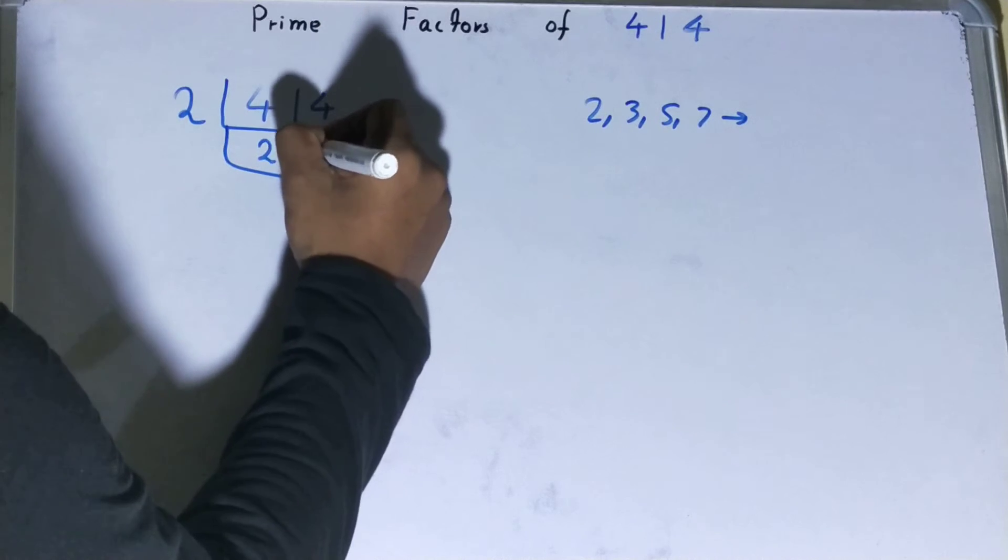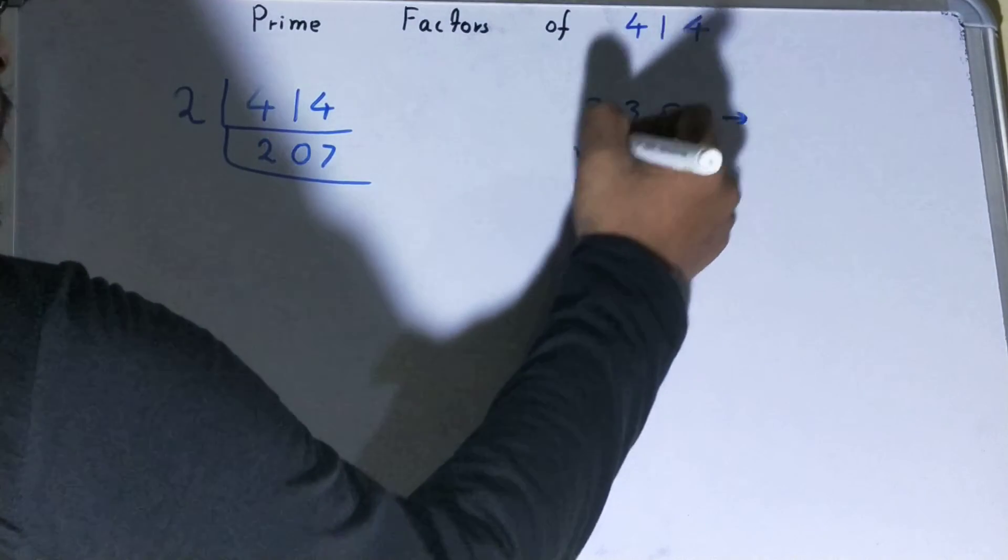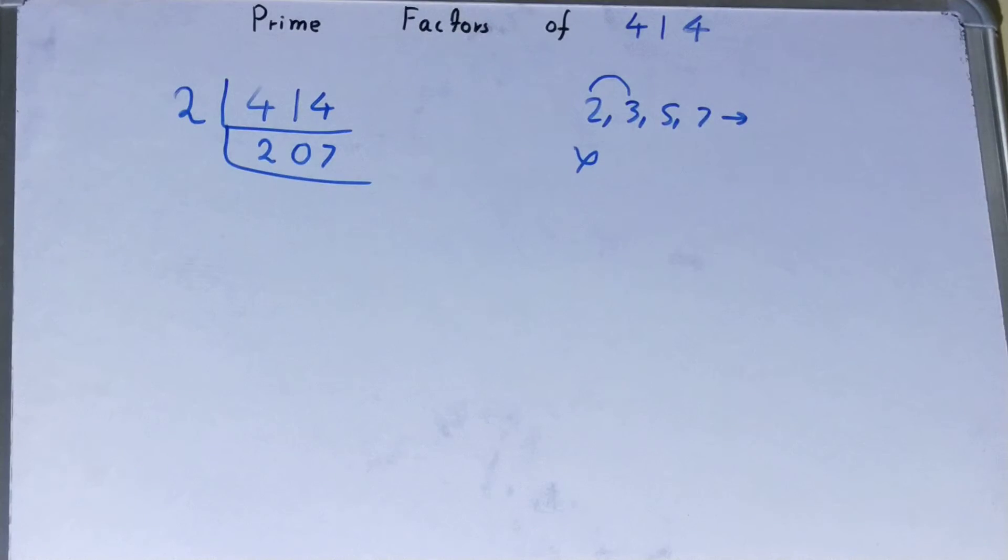Now is this 207 divisible by two further on? No, it is an odd number. So what we'll do, we'll go to the next lowest prime number, that is three.